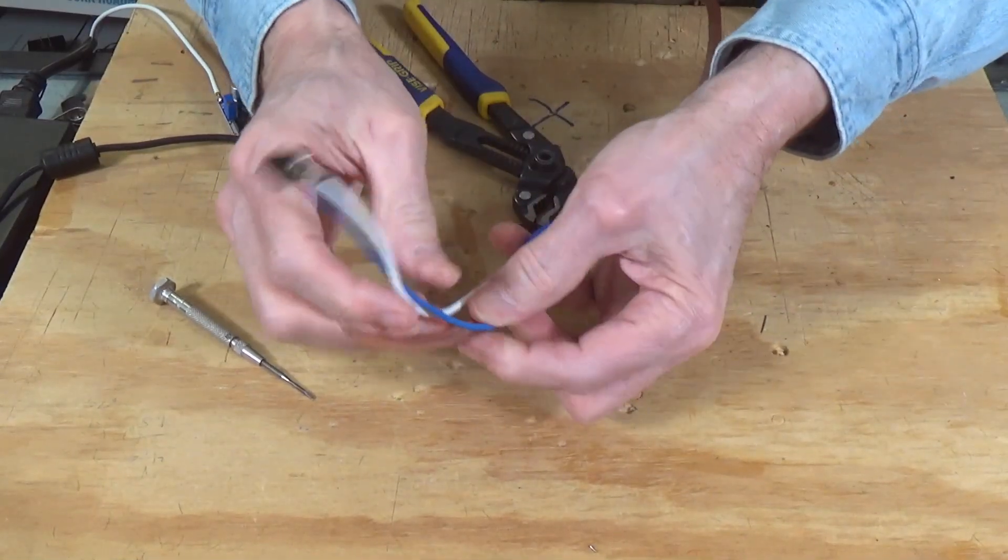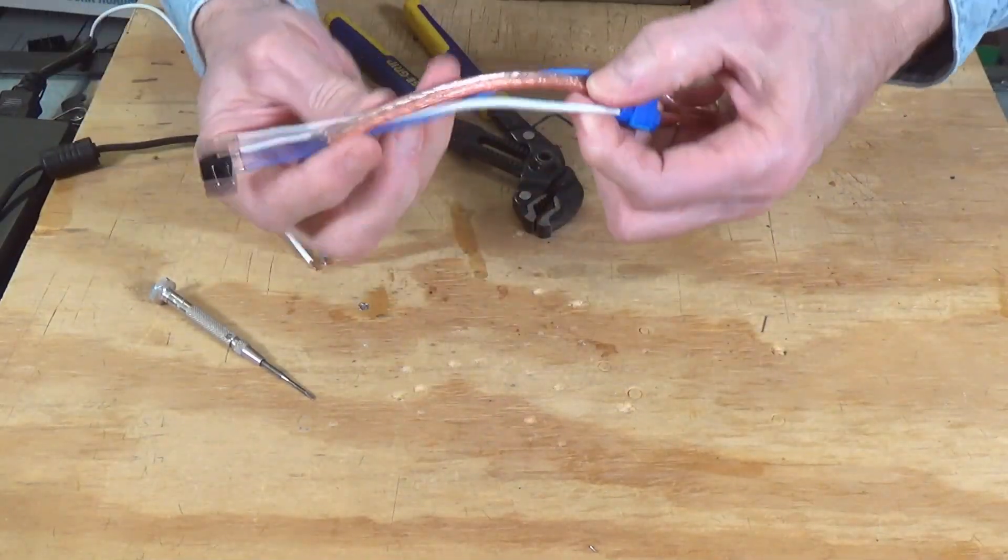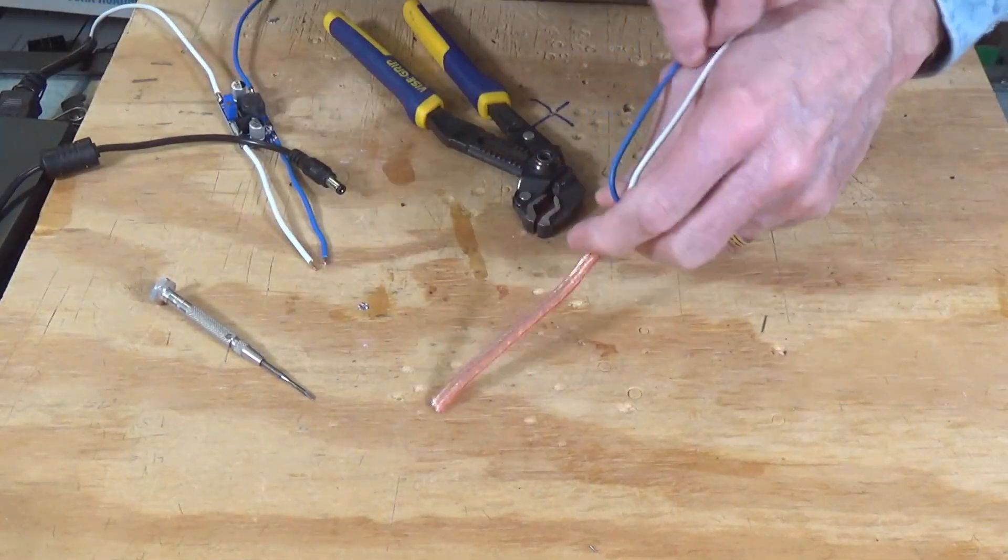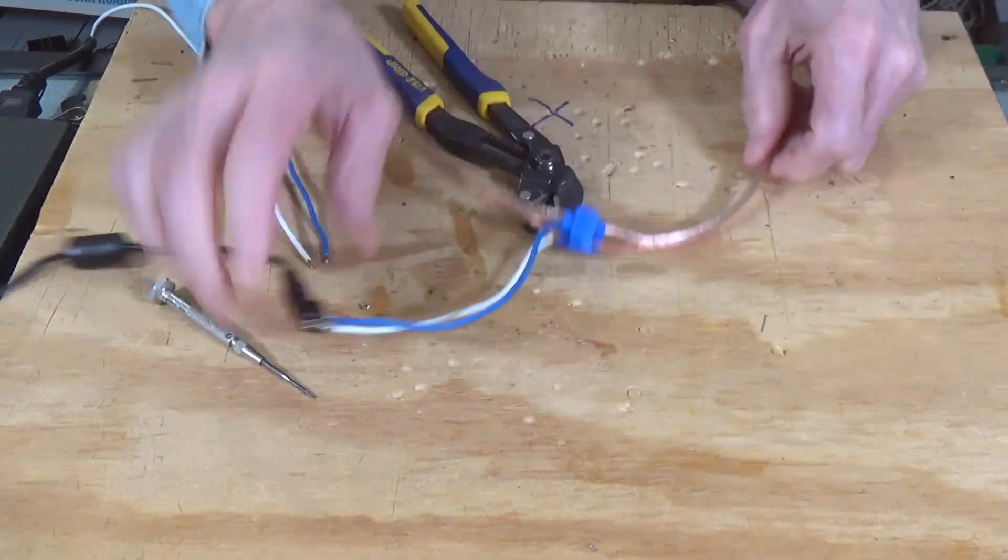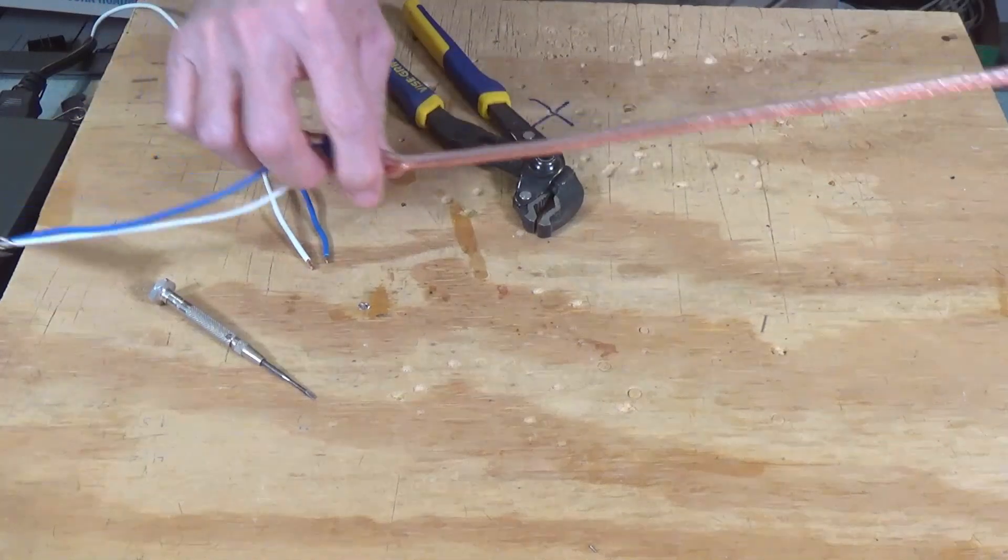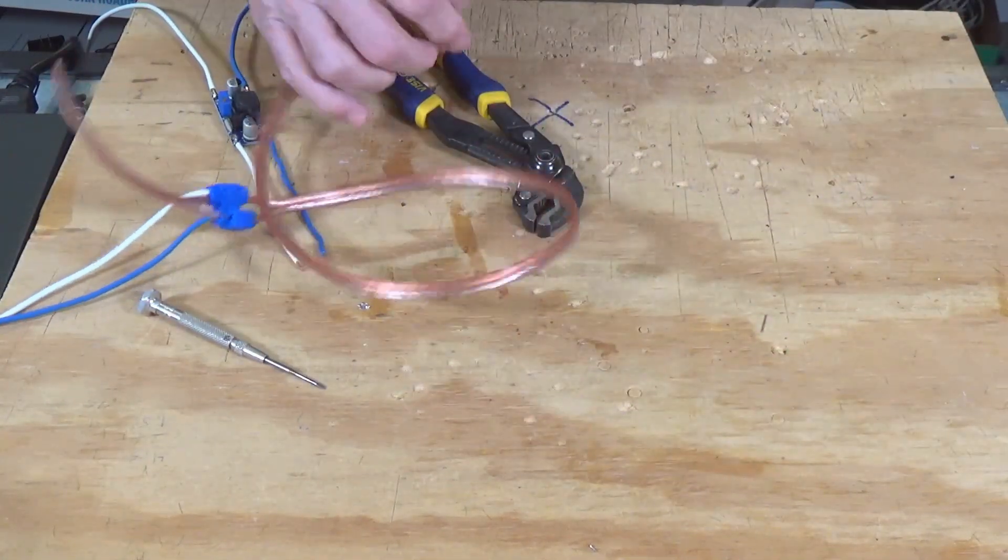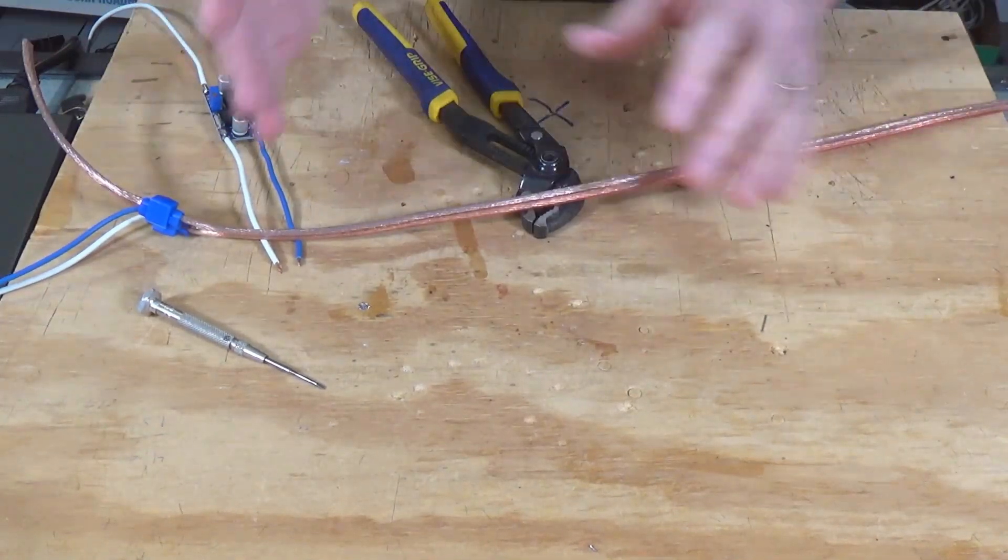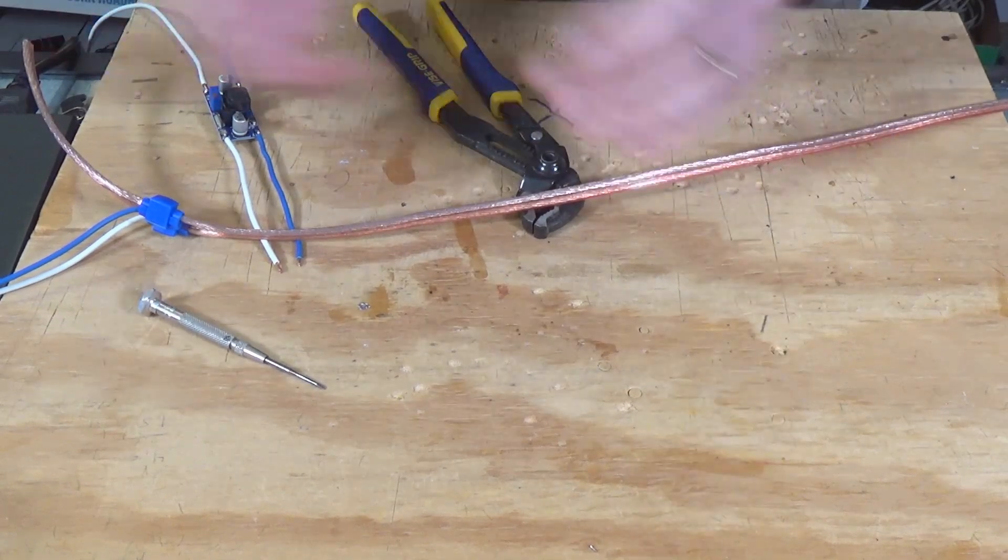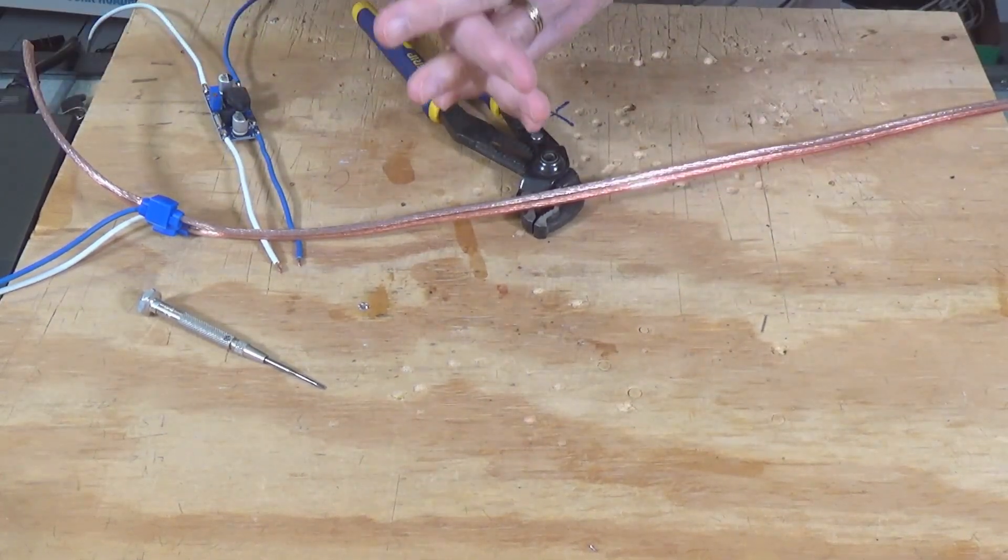And now, all I have to do is make that connection, and my power bus now has full power throughout the length of it. Because I've already made that connection as well. So that's the basic 16 volt power bus. Let's go ahead and finish with adding the 12 volt section.